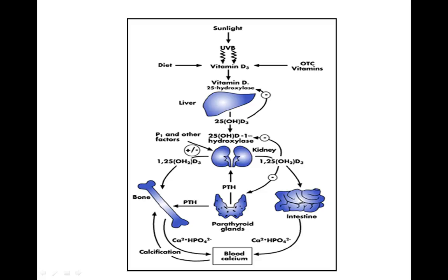That is then converted via 25-OH-D1-hydroxylase, and once converted to that form, in the kidney it can either be processed and go to the intestine, or it can go to the bone as 1,25-OH2-D3. In the intestine, the 1,25-OH2-D3 is converted into Ca2+ plus HPO4, and it's released as calcium in the blood.